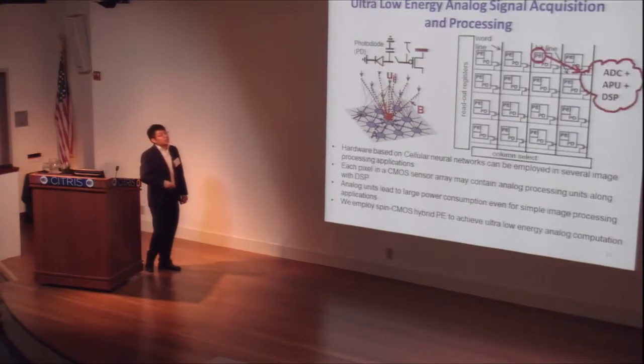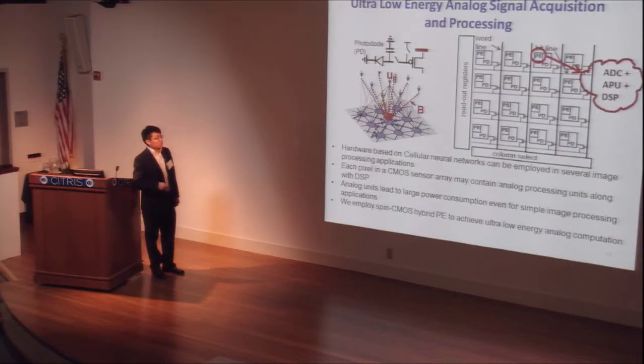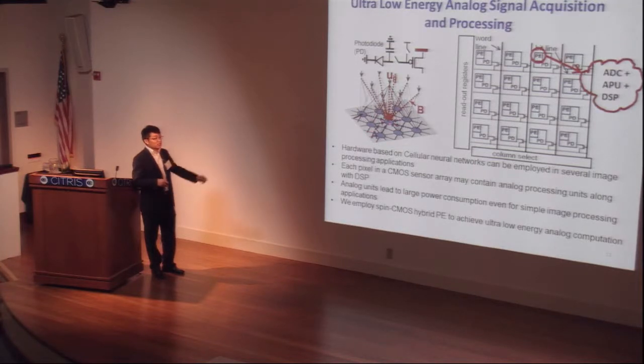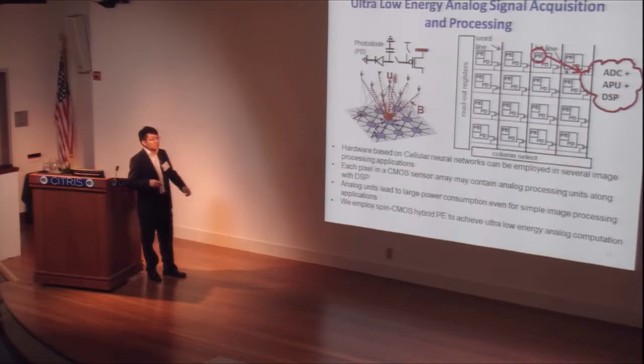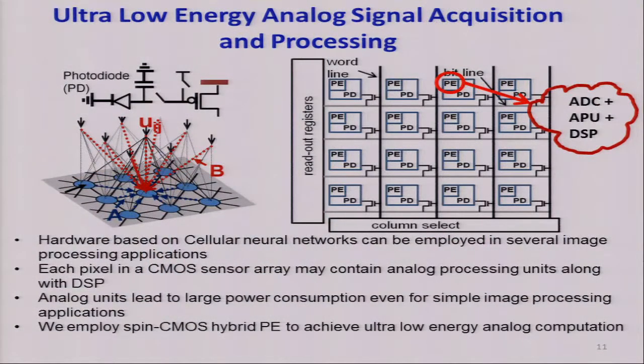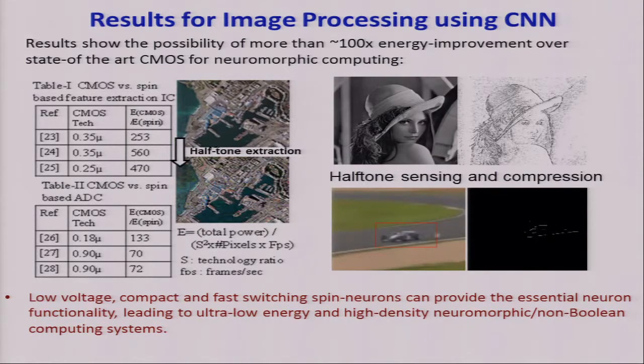Here's another application of the neuron. This is a cellular neural network which can take inputs from its neighbors and also from the upper photodiode which is for analog signal acquisition and processing. For each unit, it can contain the ADC which is the analog-digital converter or analog processing unit and the digital signal processing unit. Applied to edge extraction and some other image processing applications, we can get around 100x better than the state-of-art CMOS technology.